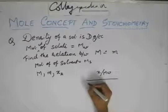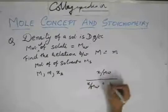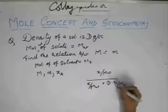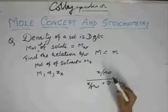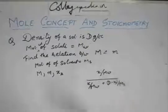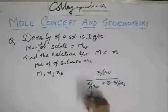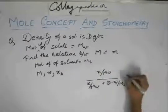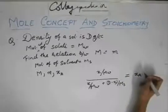So this divided by the total number of moles will be x by mw plus d minus x by ms, because d minus x is the weight of the solvent and ms is the molecular weight of the solvent. So this will be giving you the number of moles of the solvent and add it to number of moles of the solute, total number of moles you have got and this is the number of moles of solute. So that would give you xa.